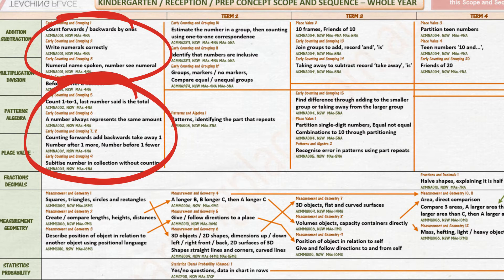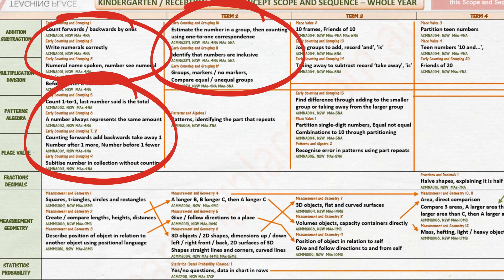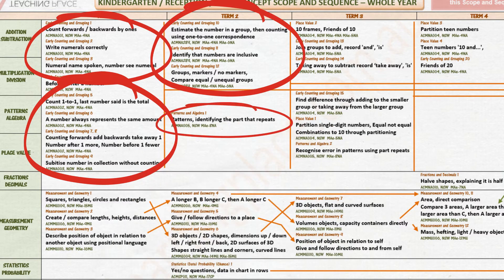Students also investigate subitising. The focus of number and algebra in Term 2 is on grouping. Students develop their understanding of groups flexibly — they divide into equal groups and make unequal groups. They explain that they started with one group and now they have more than one group. Students estimate the number in a group, identifying that numbers are inclusive. They identify the part that repeats in a pattern and use it to identify errors.